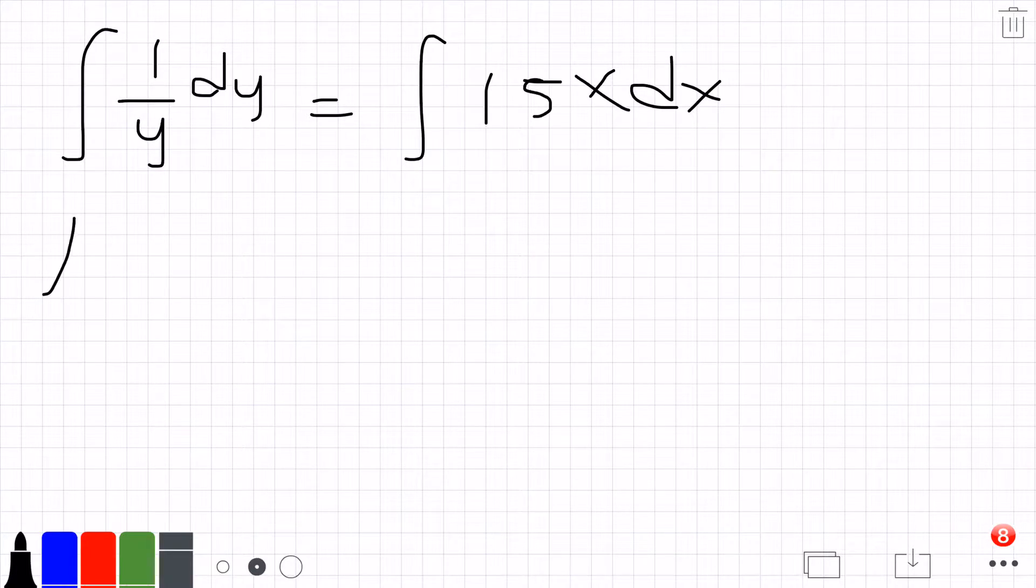We get ln y equals 15 halves x squared plus the constant.